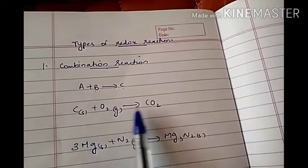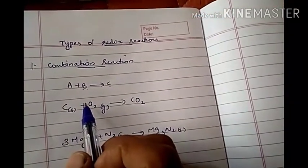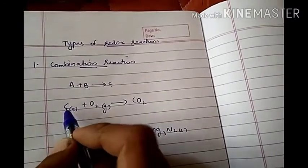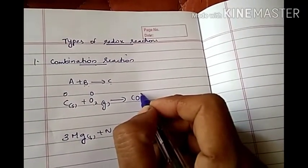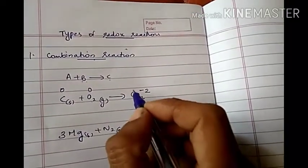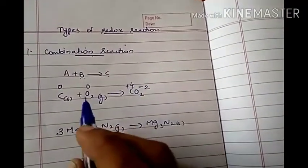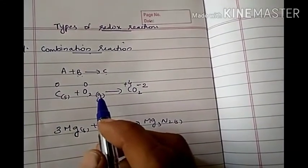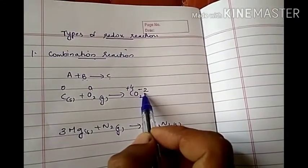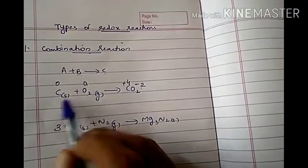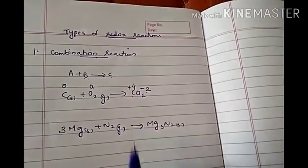For example, carbon combines with oxygen forming carbon dioxide. We can check whether it is a redox reaction. A redox reaction means both oxidation and reduction should occur. Carbon is in elemental form so its oxidation number is zero. Oxygen is also in elemental form, its oxidation number is zero. In carbon dioxide, the oxidation number of oxygen is minus two and that of carbon is plus four. So the oxidation number of carbon is increasing from zero to four — that is oxidation. So carbon is undergoing oxidation, and oxygen's oxidation number was zero, decreasing to minus two, so oxygen is undergoing reduction. Both oxidation and reduction are occurring, so this is a redox reaction.